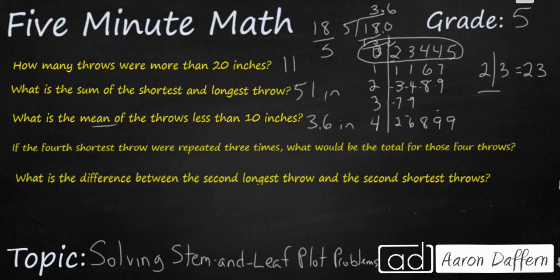What is the fourth shortest throw repeated three times? What would be the total? 1, 2, 3, 4. It's going to be 4 right there. So 4 times 4 makes 16 inches.